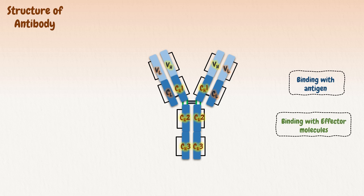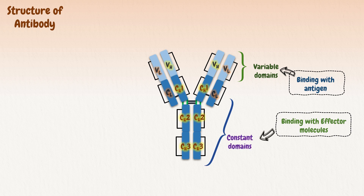To fulfill this role, the antibody structure requires great variability so that it can detect millions of different antigens — this requirement is fulfilled by the variable domains. At the same time, it also requires structural resemblance for common functions with other antibody molecules, so it needs a constant region as well, which is fulfilled by the constant domains.